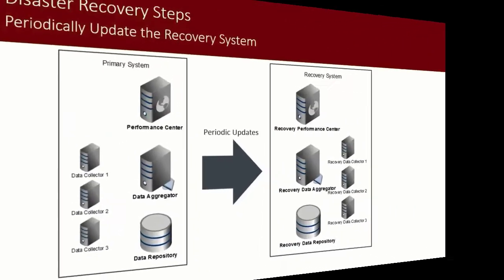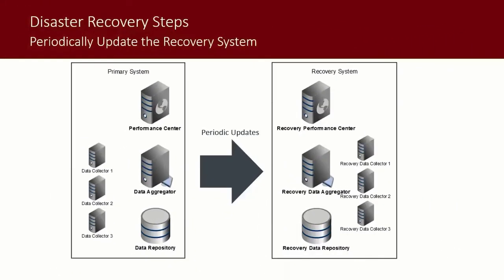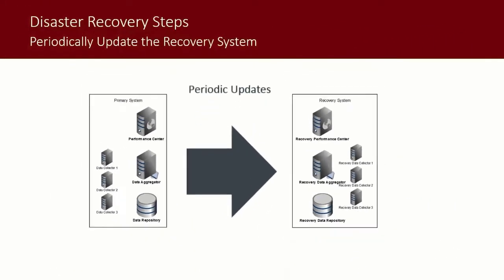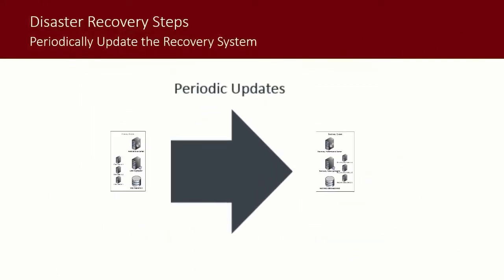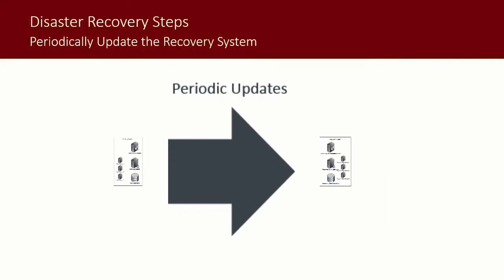The next step in a disaster recovery plan is performing periodic updates from the primary to the recovery system. This iterative step copies all required data to allow for quick activation of the recovery system in case the primary system becomes inoperable for any reason. In essence, these updates stage the recovery process.